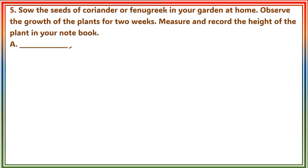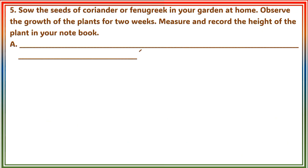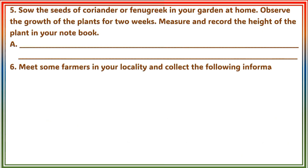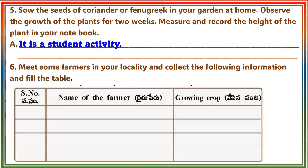Question 5: Sow the seeds of coriander or fenugreek in your garden at home. Observe the growth of the plants for 2 weeks. Measure and record the height of the plant in your notebook. Answer: It is a student activity.